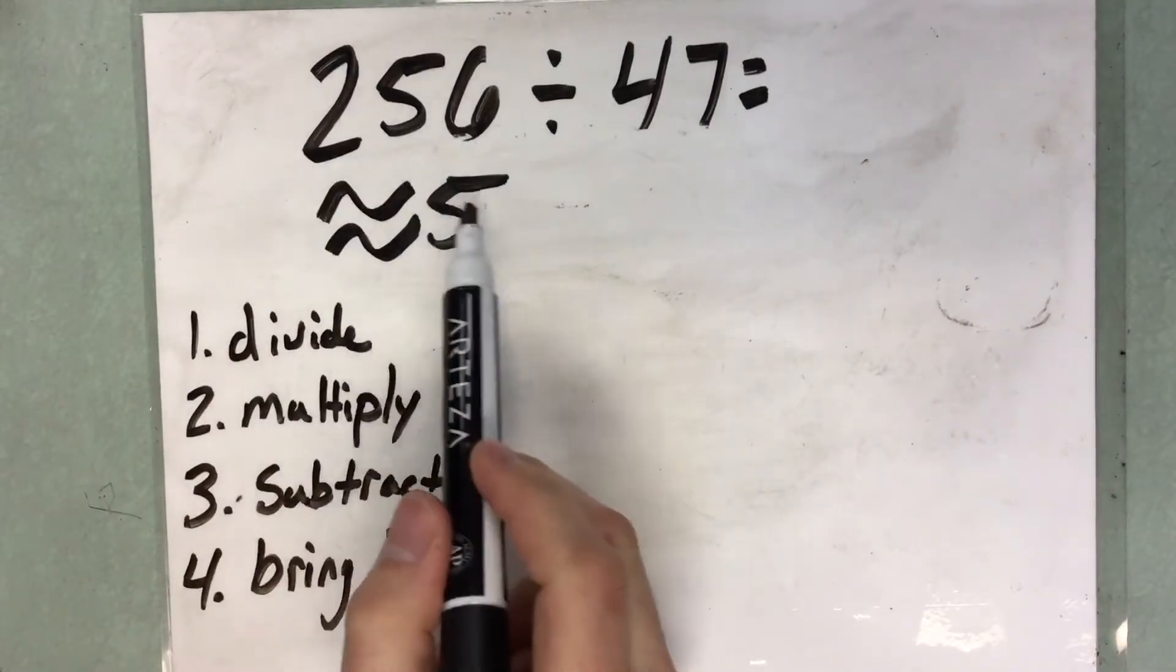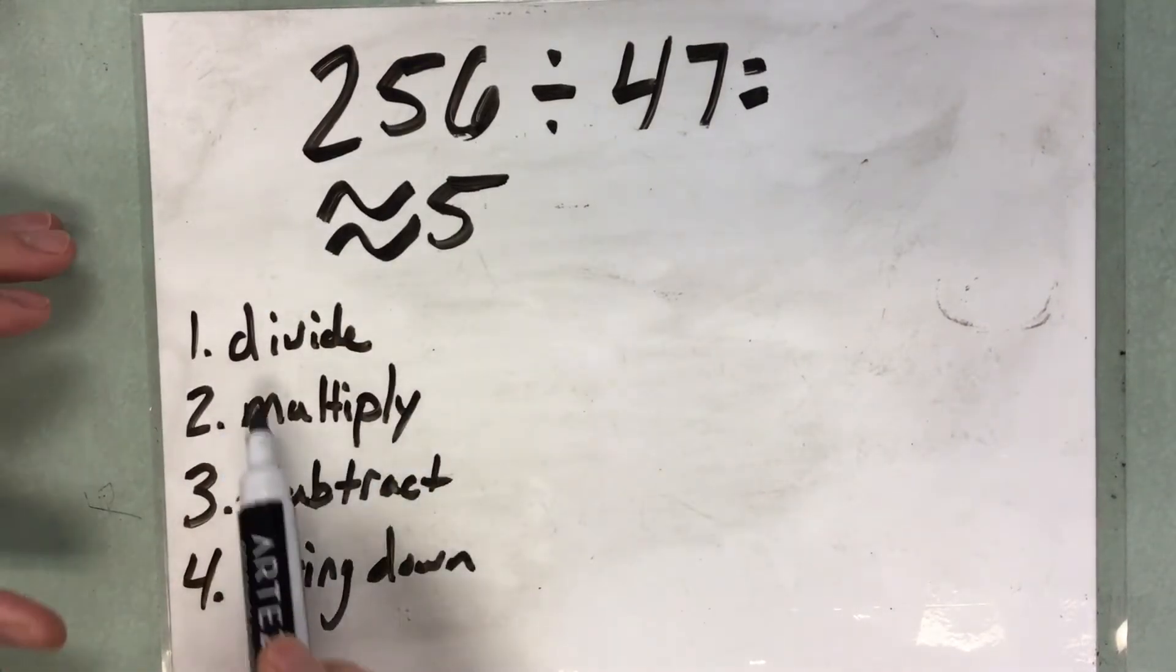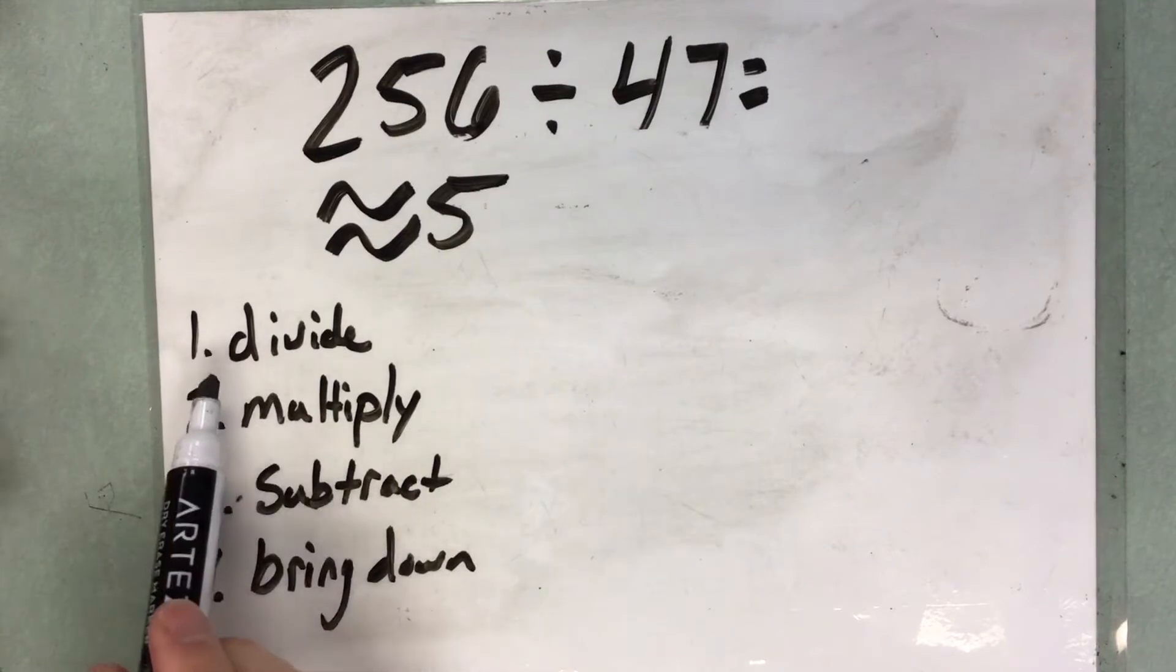Now that I know that my answer should be somewhere around 5, I'm going to go ahead and divide this out. And I have four steps.